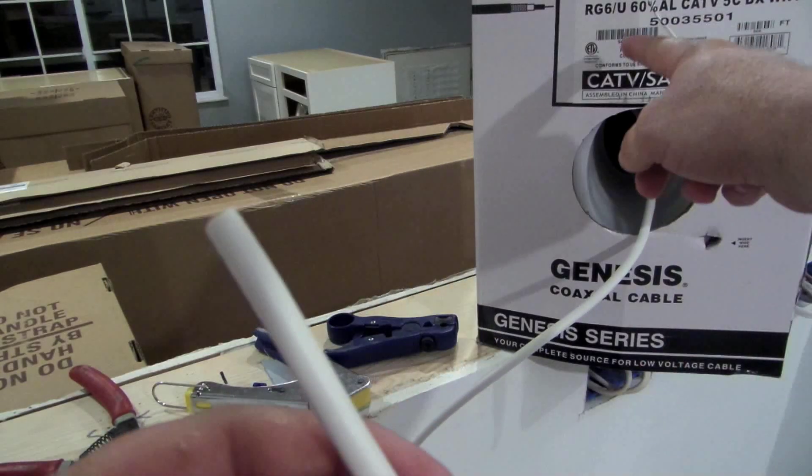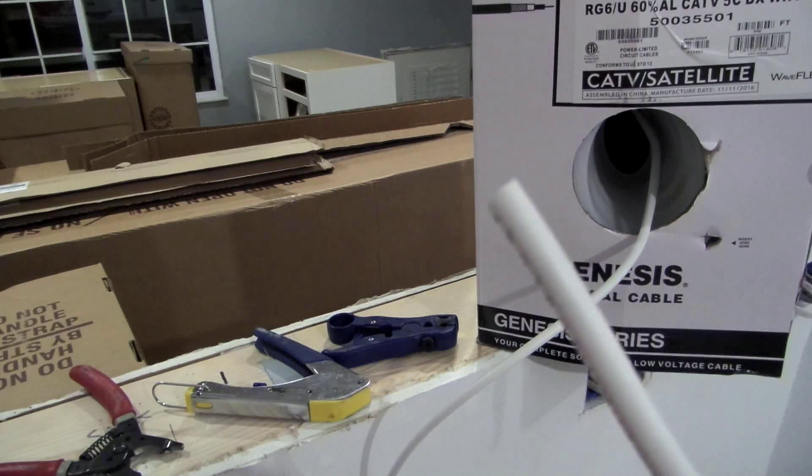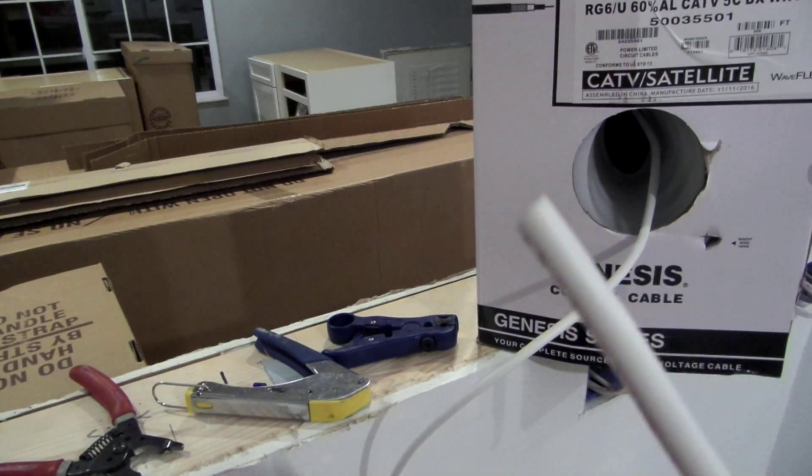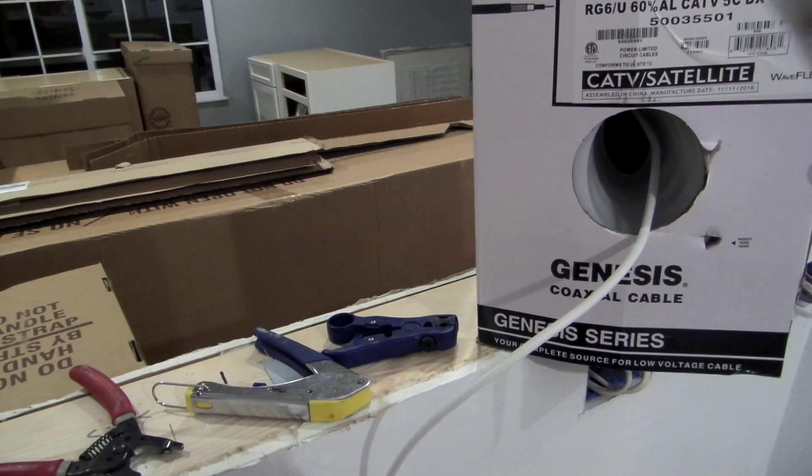So like I said, you're using RG6 here. You bought some ends. You can actually just buy a kit that has all this stuff on it. I would look up coax cable crimper kit.